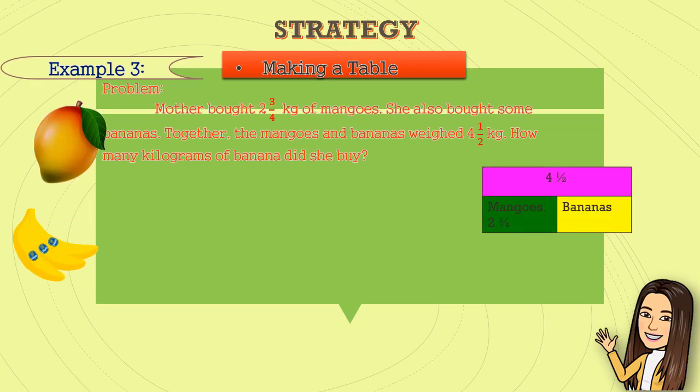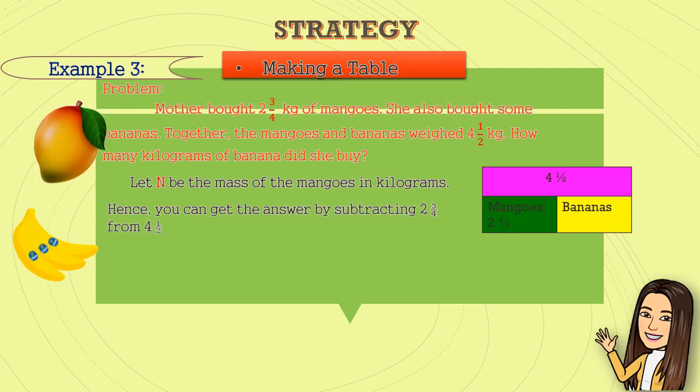Using this table, we have four and one-half as the total and two and three-fourths for the mass of mangoes. Then, we are looking for the mass in kilograms of bananas. Let N be the mass of the mangoes in kilograms. Hence, you can get the answer by subtracting two and three-fourths from four and one-half. That is four and one-half minus two and three-fourths.